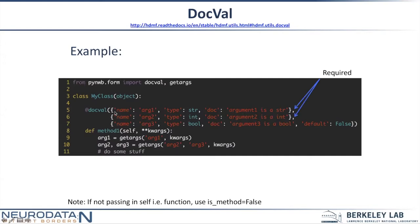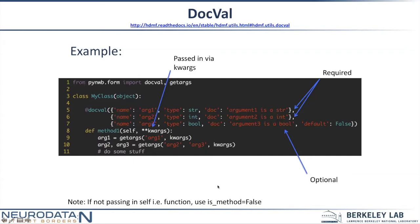I've defined two required arguments: arg1 (a string) and arg2 (an int), with documentation strings for those arguments. Then I've defined an optional argument that's optional because it has a default. These are passed in through the kwargs argument, so everything comes in as a dictionary. The get_args function serves as a convenience method for pulling arguments out of the kwargs dictionary. Note: if you want to use docval on a function that's not a method, you'll have to specify is_method=False, because every method passes in self as the first argument and docval needs to account for that.